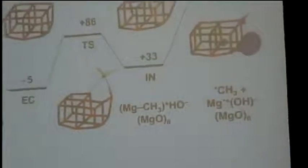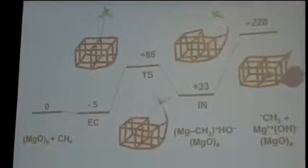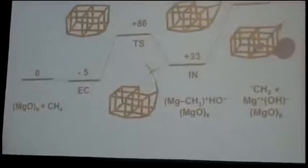So the first thing we do, we absorb methane on this and what we find is with a very high barrier and with a little endotermicity, we split heterolytically the methane. So we get a proton on oxygen and we get a Grignard type species with methylate and magnesia.